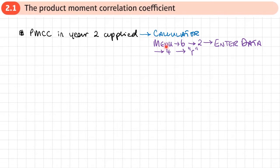As a reminder, on your calculator menu 6, you enter the data, press 4, and write down the value of R. Here, we're actually going to be working out the PMCC manually, and the formula is in the formula book.